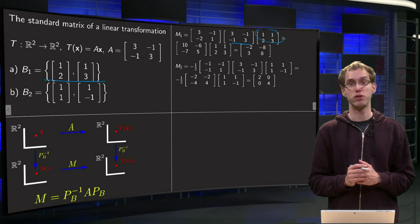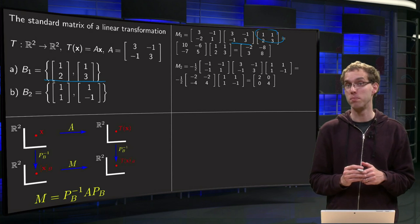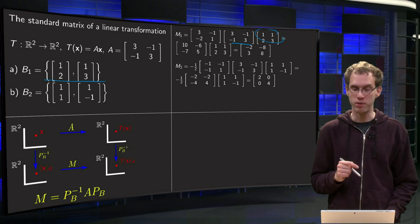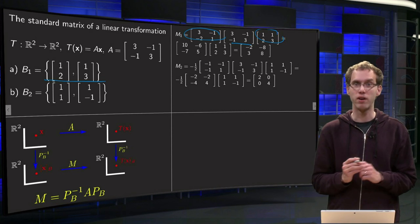And our inverse of a 2 by 2 matrix is easy. Determinant equals 1 times 3 minus 1 times 2 equals 1, so that's easy. So we interchange the 3 and the 1 and we add a minus sign for the 2 and the 1. So there we have our inverse,